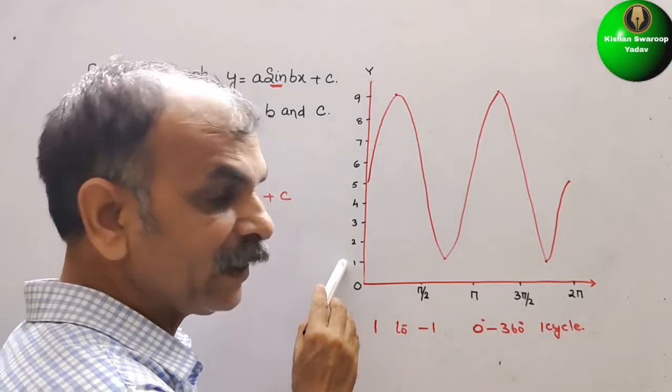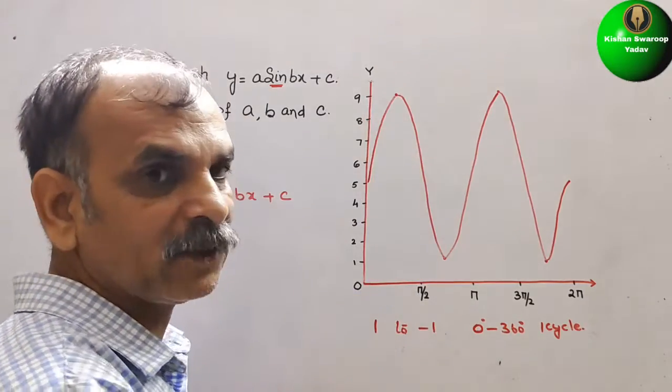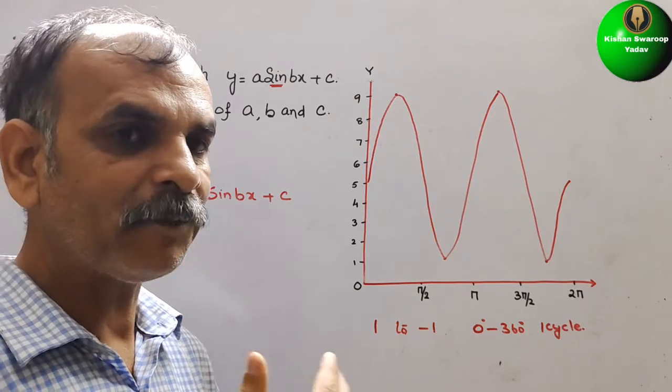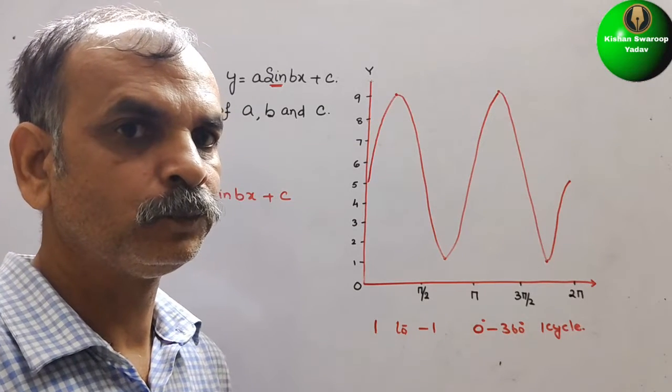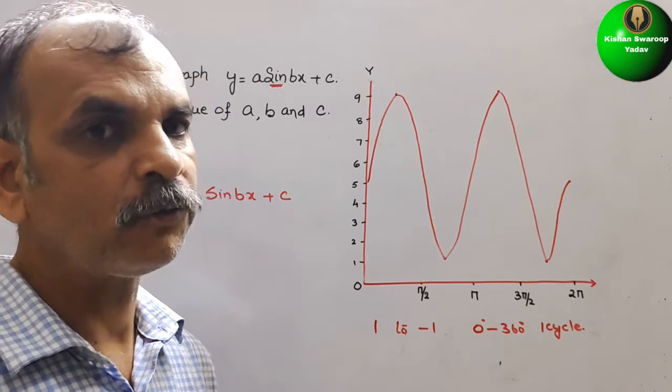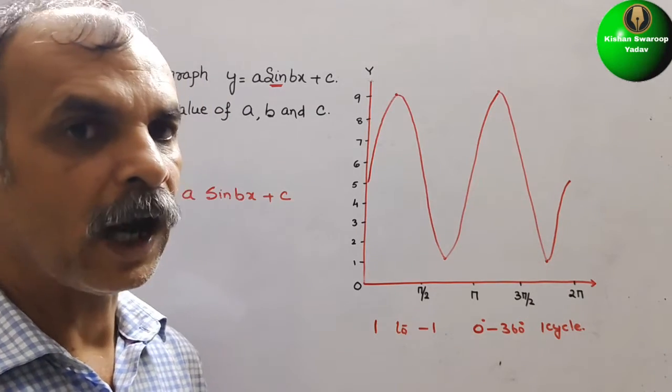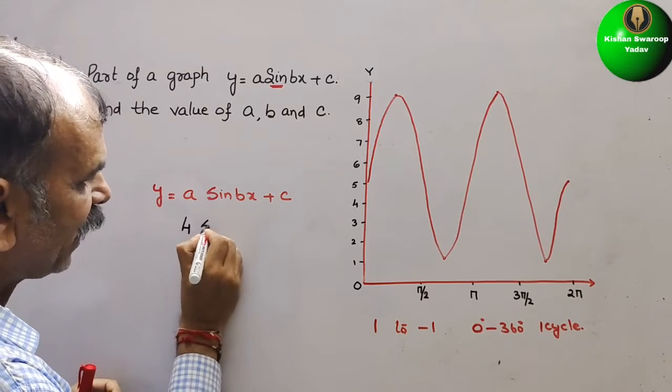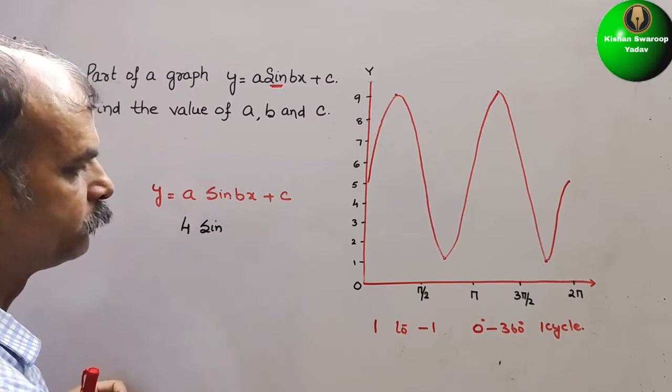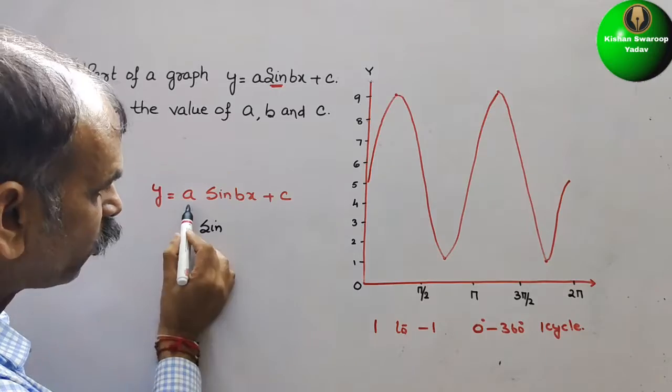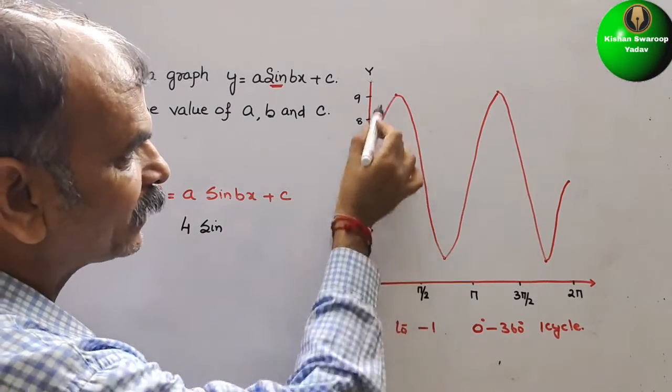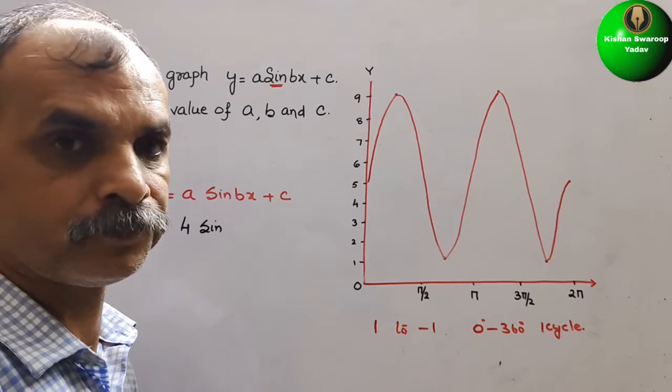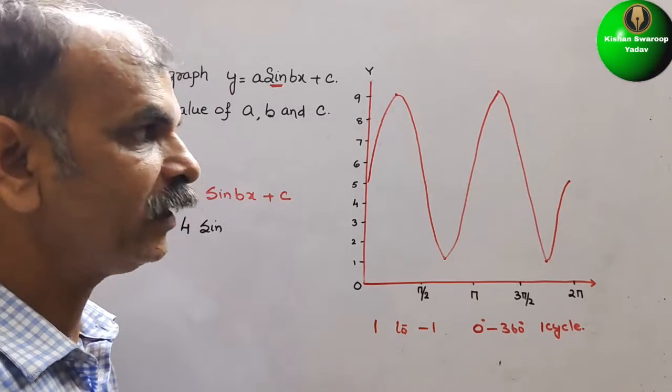So you can see here 1 is there and here 9 is there. So 9 minus 1 is 8. 8 divided by 2. That is your 4. So now we can say a here comes 4. Sin now. That means 4 times we have multiplied the amplitude into 4.